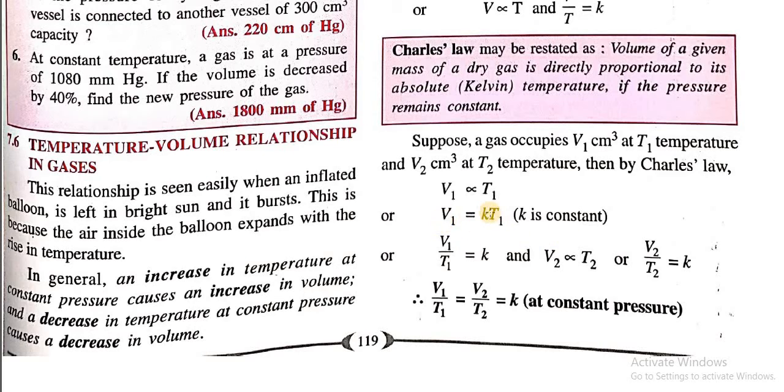And once again, we can arrange it: V₁/T₁ equals k. And V₂ is directly proportional to T₂, so we can write V₂/T₂ equals k. So finally, these two constants are equal. We can write the equation as V₁/T₁ equals V₂/T₂. That will be a constant. So this is the final expression for Charles's Law that we are going to use for the numerical.